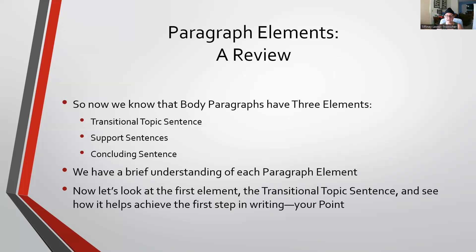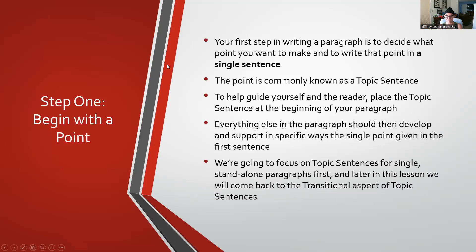Let's look at that first element — the transitional topic sentence — and see how it relates to point, the first base of writing. Your first step in writing a paragraph is to decide what point you want to make and to write that point in a single sentence, commonly known as a topic sentence. To help guide yourself and your reader, you place the topic sentence at the beginning of your paragraph. It is the first sentence, and then everything else in that paragraph should develop and support that single point.